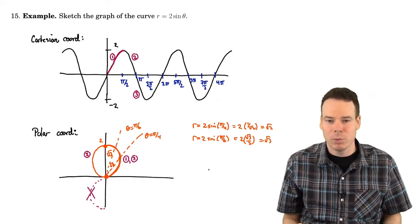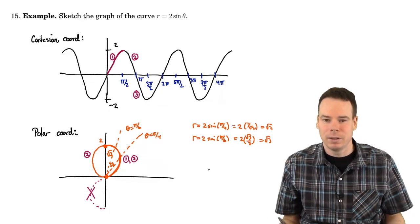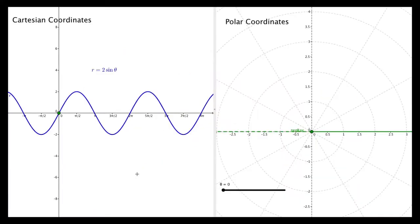Okay, so it might, at this point, it might be worthwhile to sort of see this dynamically. Okay, so here we've got the curve sketched in the Cartesian coordinate system on the left. Watch what happens as that point, as the theta value increases. So we have this point, this green point, on the Cartesian curve.